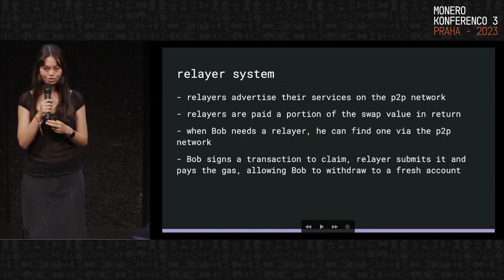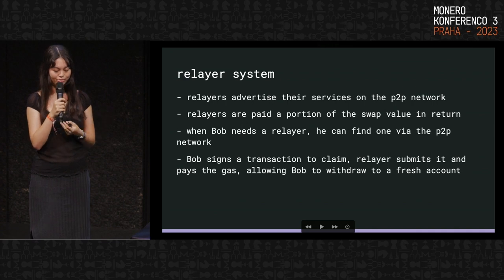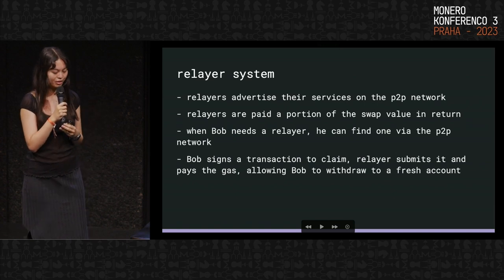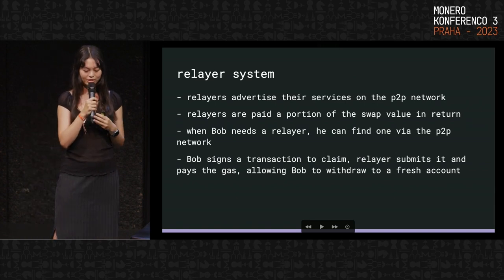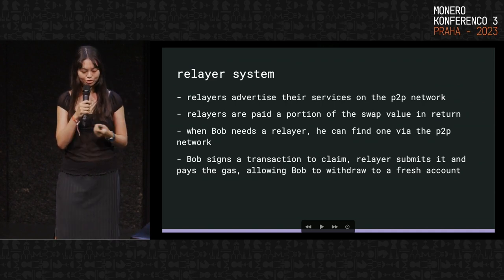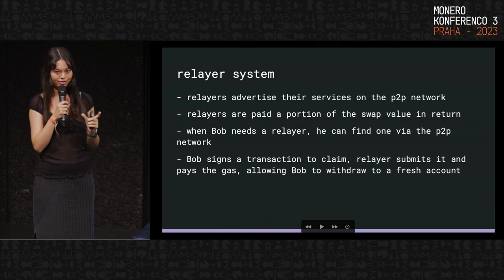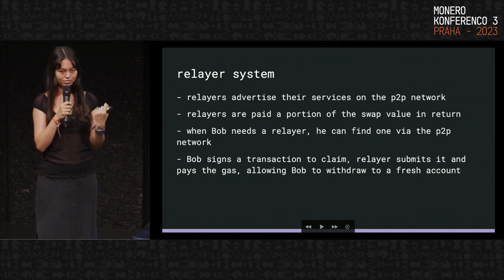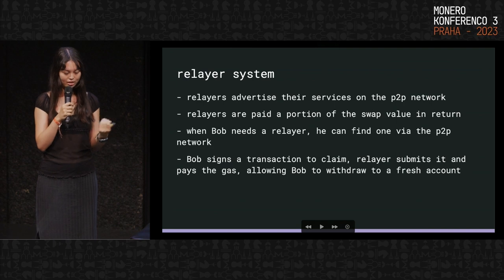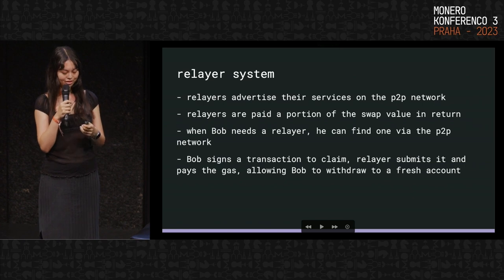Relayers also advertise their services on the P2P network, similar to how people making offers advertise them. They're paid a portion of the swap value in return. If you need a relayer, the program will automatically search the P2P network and find one for you. Bob will sign the claim transaction, the relayer submits it on their behalf and pays the gas. The contract checks the signature and transfers most of the swap value to Bob, with a little bit going to the relayer as the fee. Then you can withdraw to a fresh account.